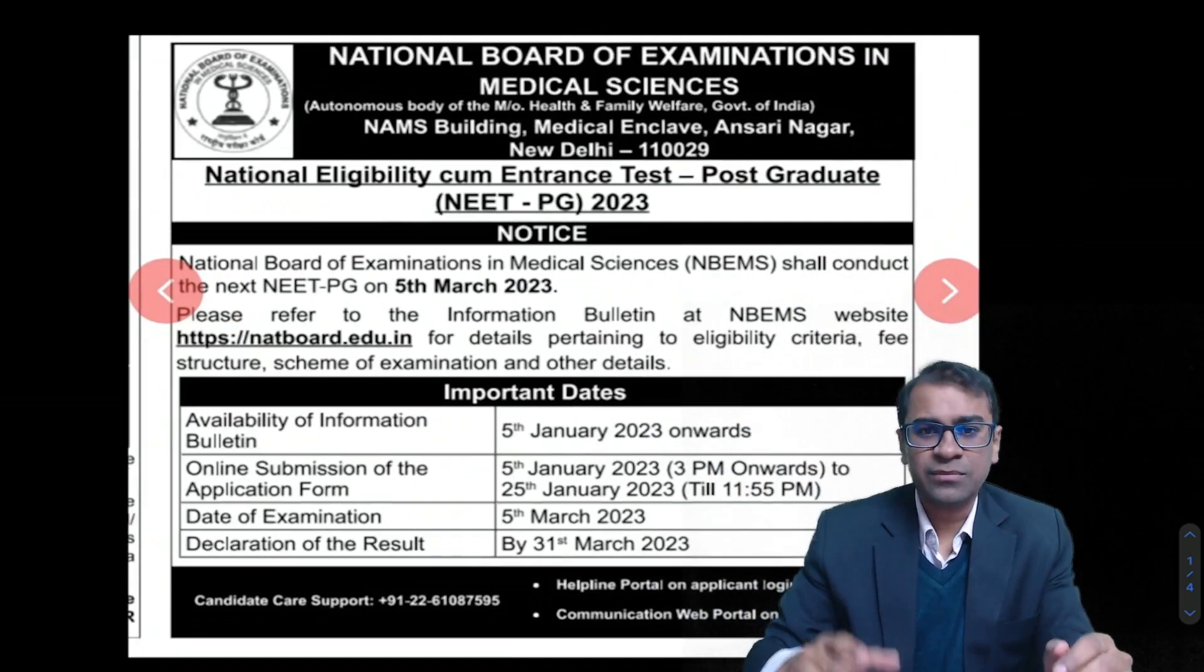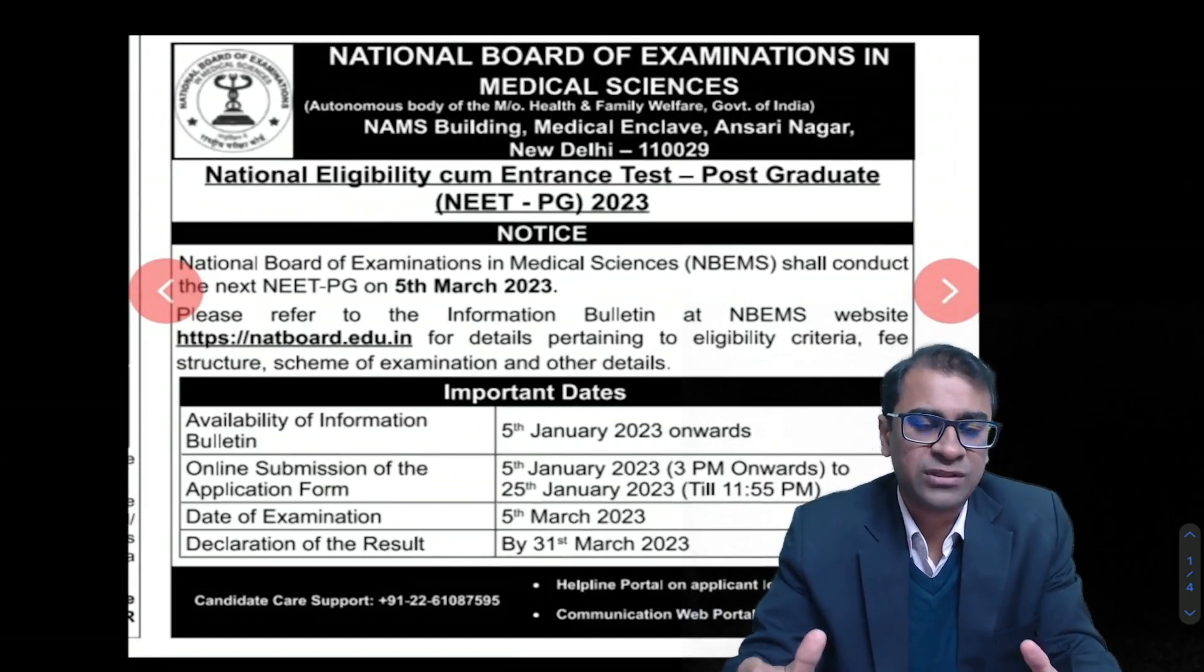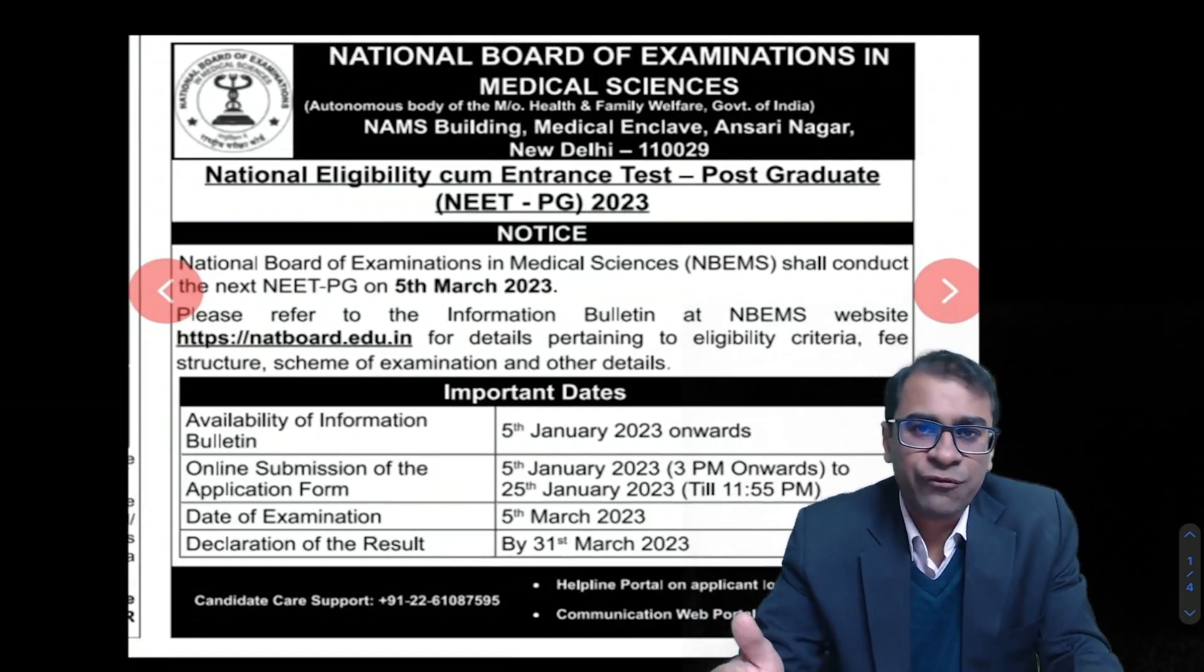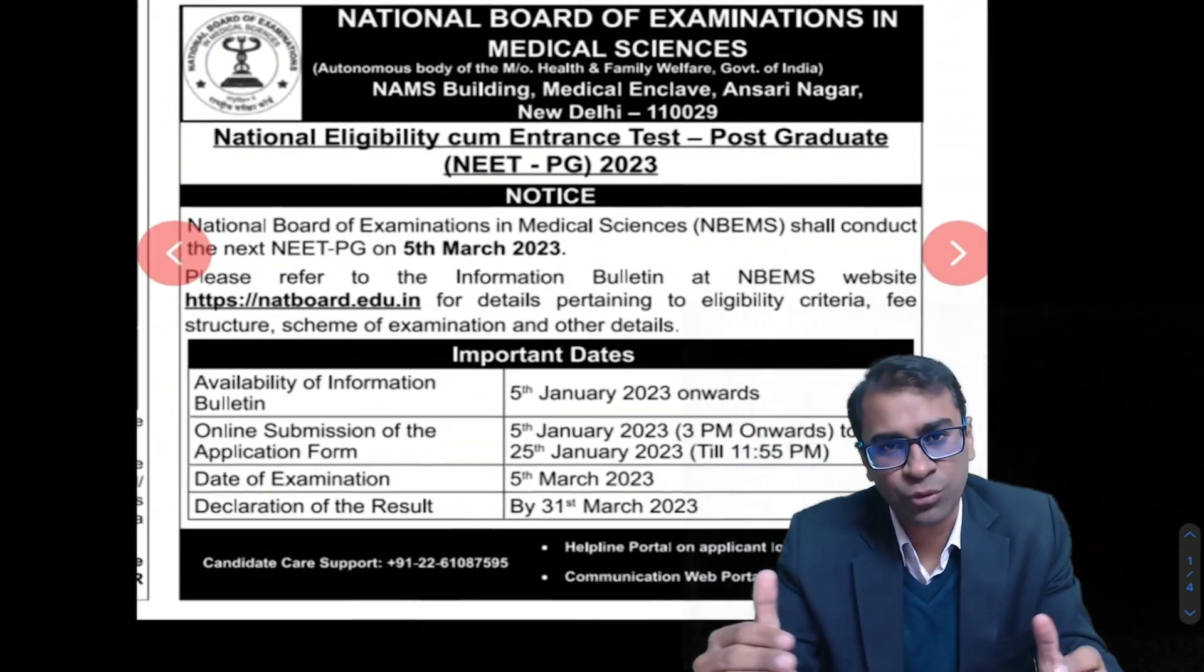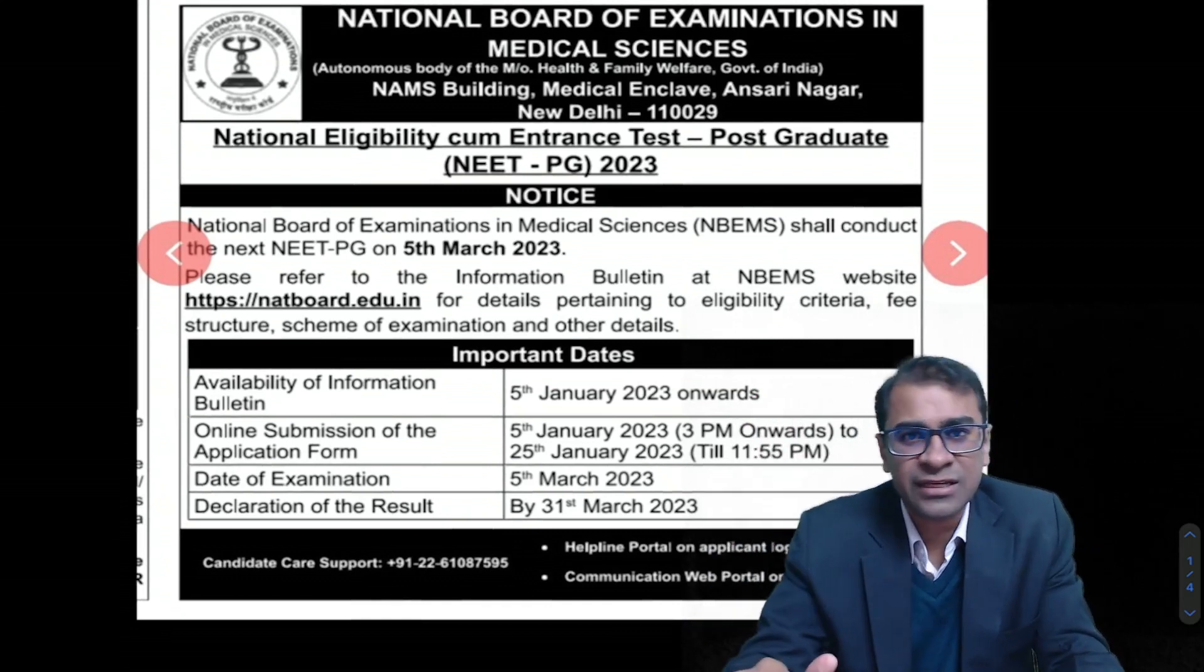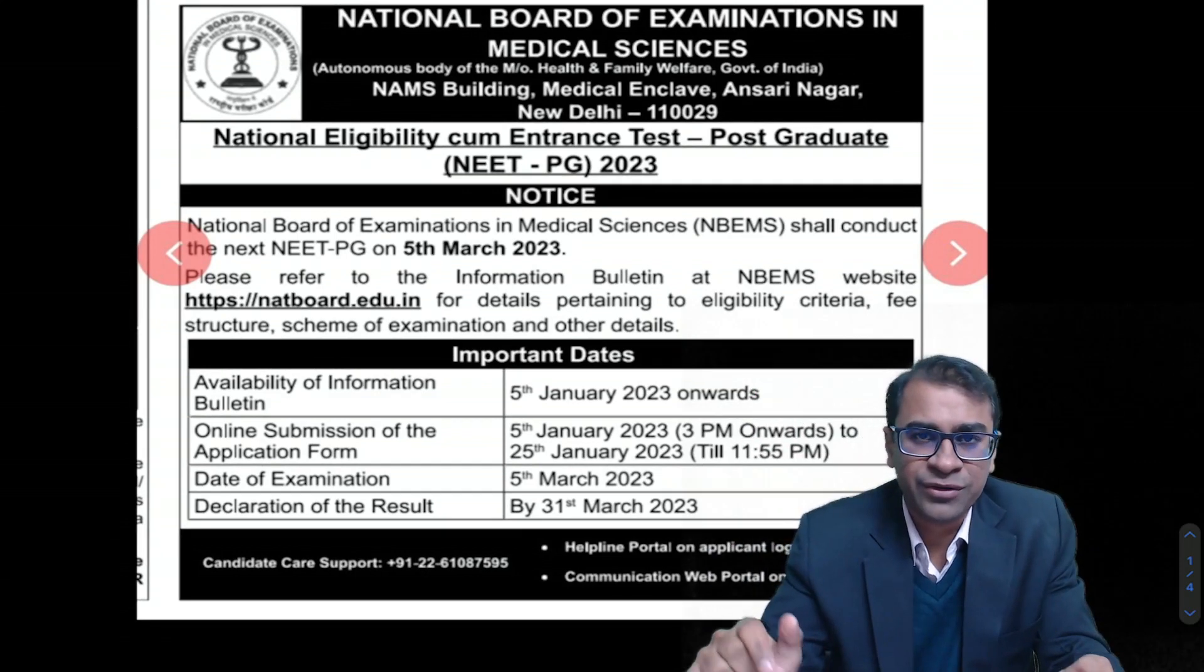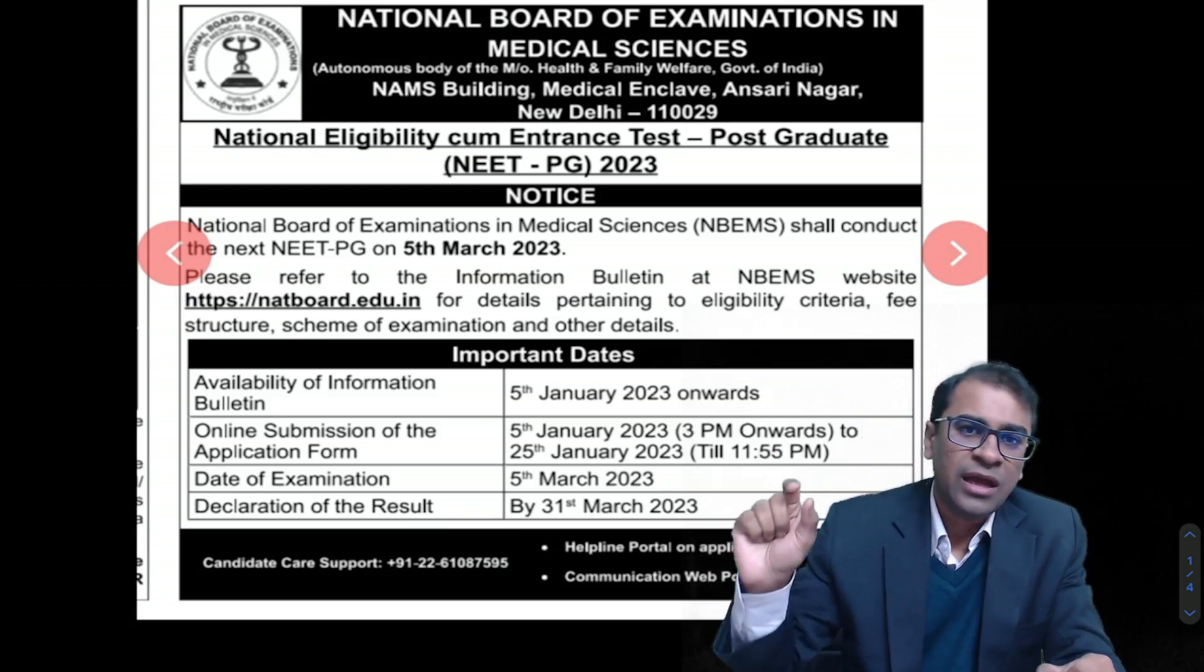So guys, this is a notification that actually came today morning in the newspapers. It's authentic information as it looks like because this also is advertisement from the NB website. It talks about the ability of bulletin to be available from today onwards that is the 5th of January. The online submission date is till 25th January 2023 and the date of exam is as expected on the 5th of March 23, and the result declaration would be 31st March.